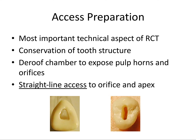First things first, we need to gain access to the pulp space, and we do this by drilling through the most accessible and logical place — that would be the lingual surface for anterior teeth, or the occlusal or biting surface for posterior teeth. The access preparation is the most important technical aspect of the root canal treatment. Conservation of tooth structure is critical; the cusp tips and marginal ridges provide significant strength to the tooth, so we want to leave those alone if possible.